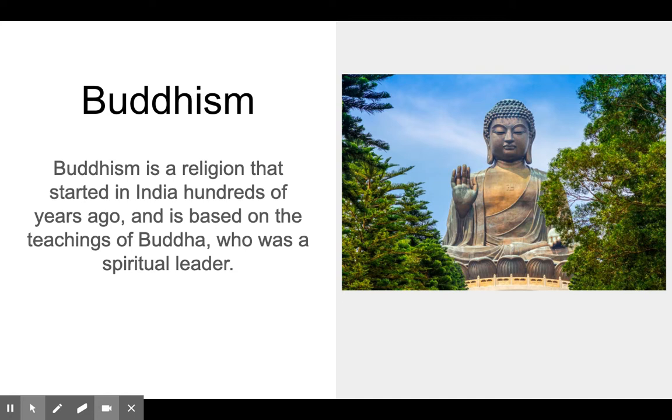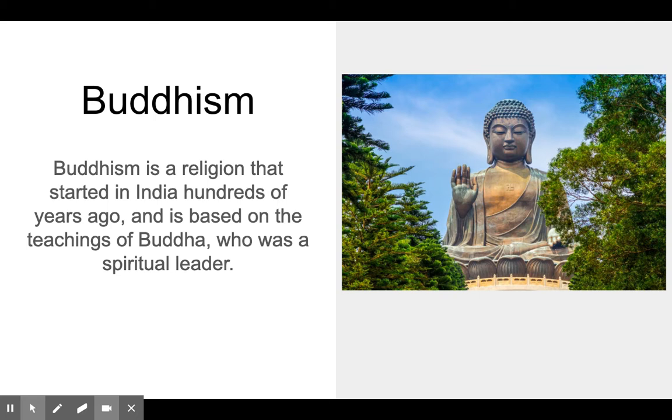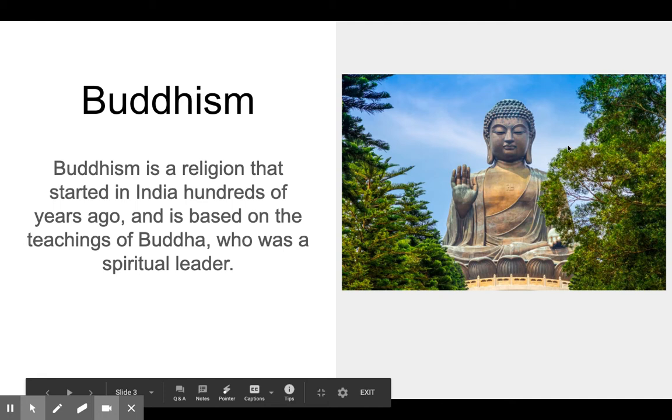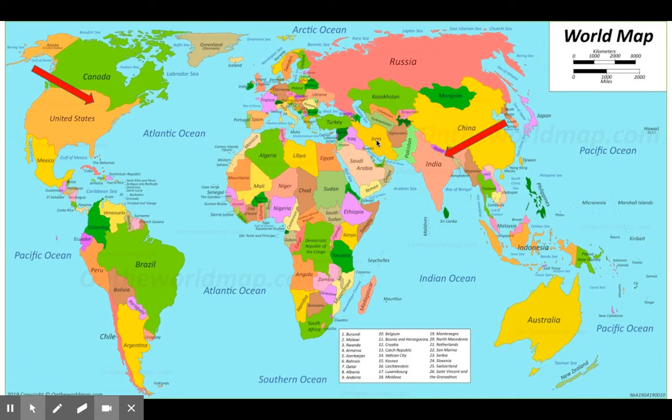Now these Buddhist monks, I want to explain a little bit about what I mean when I say Buddhist. Buddhism is a religion that started in India hundreds of years ago, and is based on the teachings of Buddha, who was a spiritual leader. This is a very large sculpture of Buddha right there. So here's where we are on the map in Minnesota, and way across the Atlantic Ocean, across Africa, across the Middle East, there's India. That's where the Buddhist religion started.